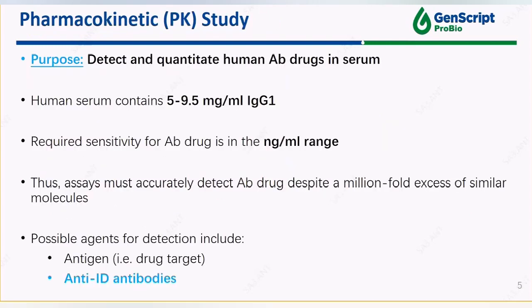So how is PK achieved? Mass spec is widely used for the measurement of small molecule drugs. However, antibody drug is totally a different story. Human serum contains 5 to 10 milligrams per milliliter of IgG, while the regular level of antibody drug requires the sensitivity of a nanogram per milliliter range. As a result, this assay must be able to pick up the signal of antibody drug among a million-fold excess of similar molecules.